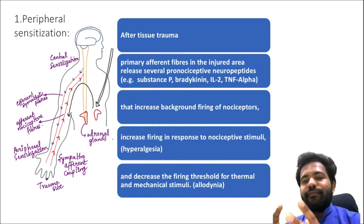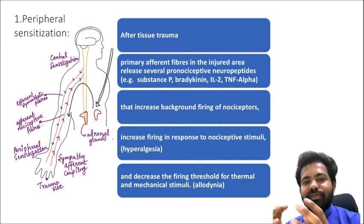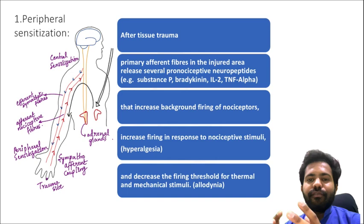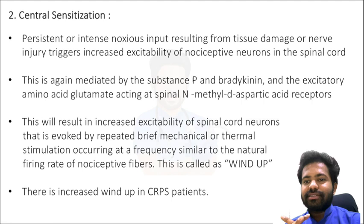Due to peripheral sensitization there is increased firing in response to nociceptor stimuli, which is called hyperalgesia, and also a decreased firing threshold for thermal and mechanical stimuli, which is known as allodynia. Hyperalgesia and allodynia are one of the distinguishing features of CRPS.